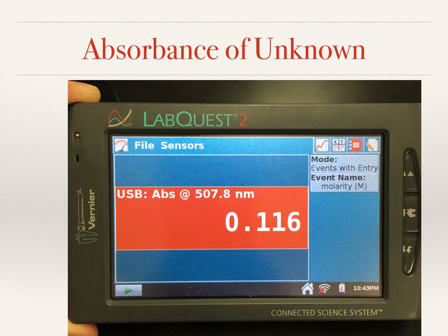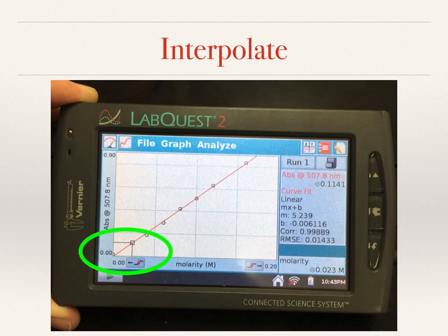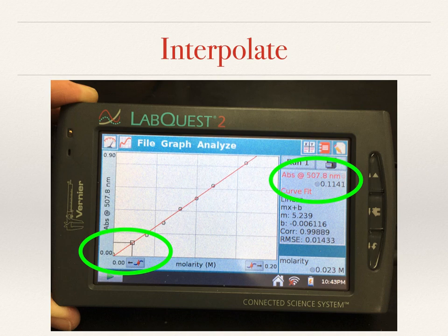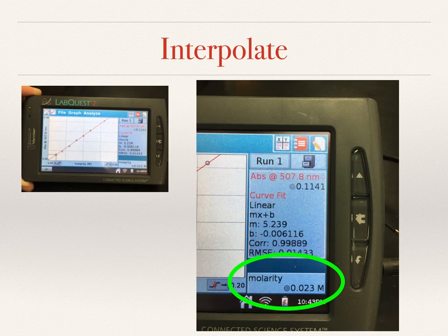We know the absorbance at that wavelength but not the concentration. So we go back to the graph and interpolate. Under the Analyze function, we click the Interpolate box. That allows us to move along the line to find the absorbance value closest to what we read. I moved my data point to the absorbance closest to 0.116 — I got 0.1141. That told me that, according to the graph, my molarity was around 0.023 molar. This is called interpolating. Here's a zoomed-in picture so you can see it a little bit better.